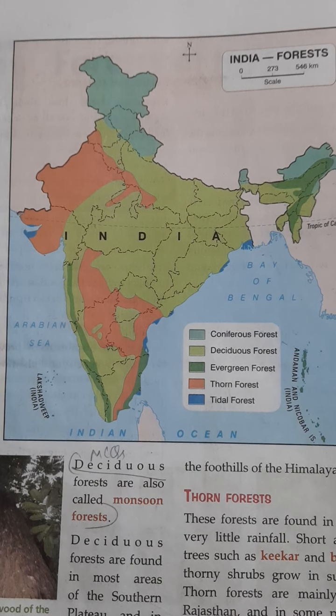The examples of coniferous forests are pine, deodar, and oak trees — tall and cone-shaped trees with needle-shaped leaves. Coniferous forests are found in the Himalayan region. Just look at the map — this part, and here also, and here also.